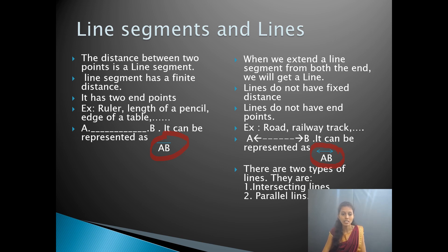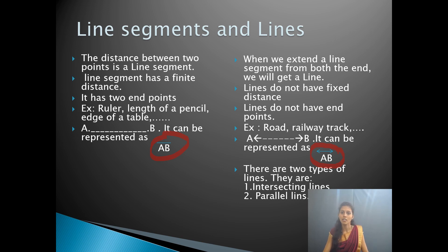In a line, A and B are any two points, but the line continues on both sides — there is no end. A road is the best example for a line: we have not seen the end of a main road. Similarly, a railway track continues on with no end. That non-measurable, infinite length is the best example for a line.